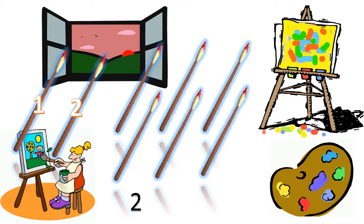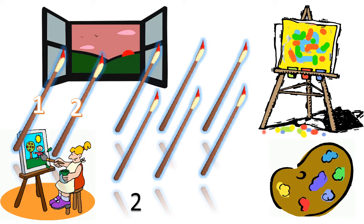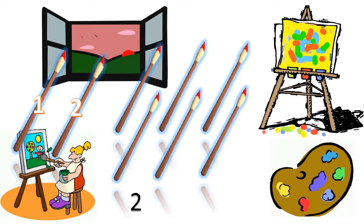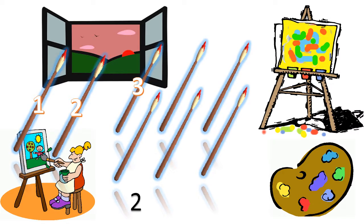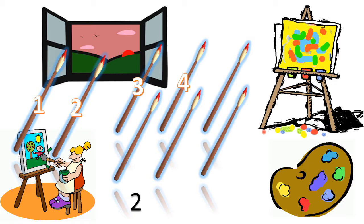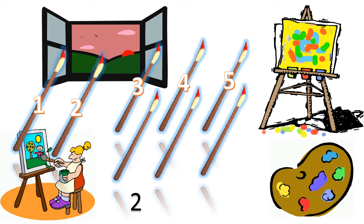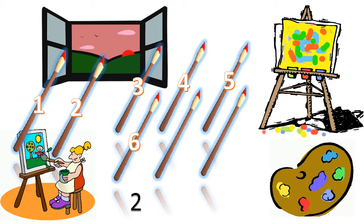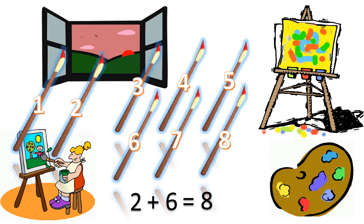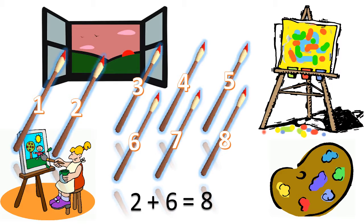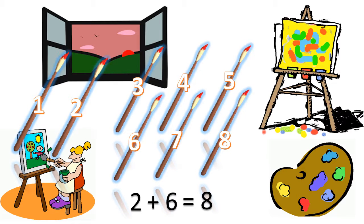She found six more in her closet. Remember, you have two. Get it going. Two, three, four, five, six, seven, eight. Two plus six equals eight. Ruby now has a total of eight paintbrushes.